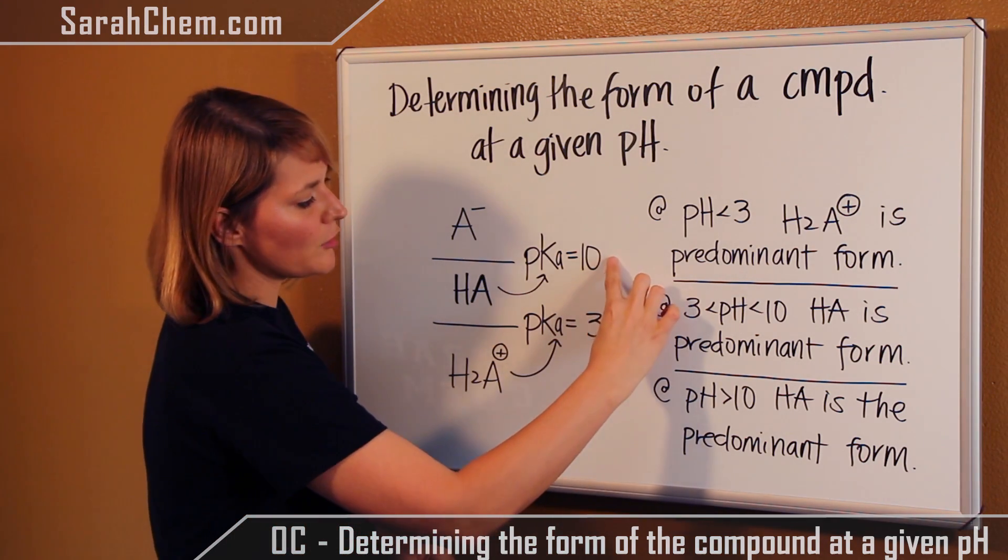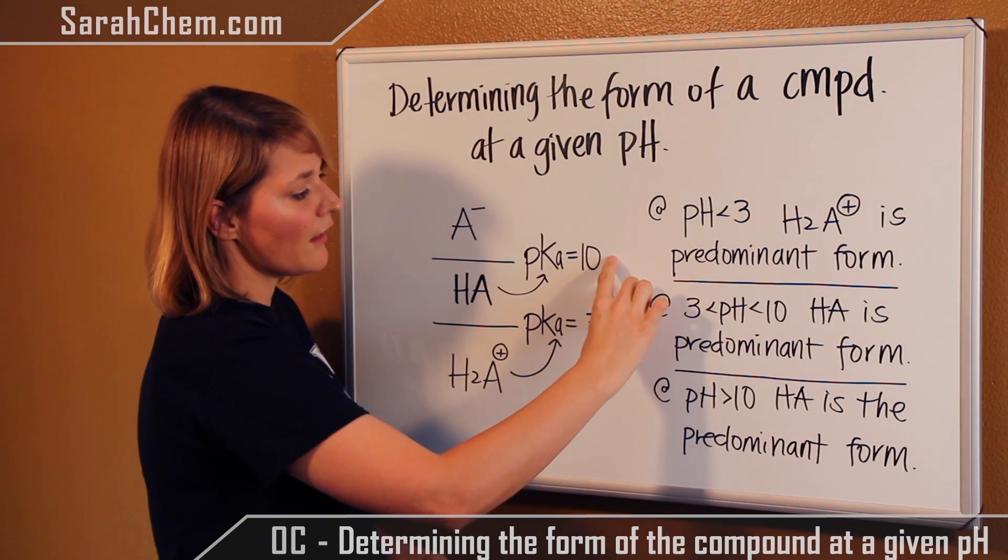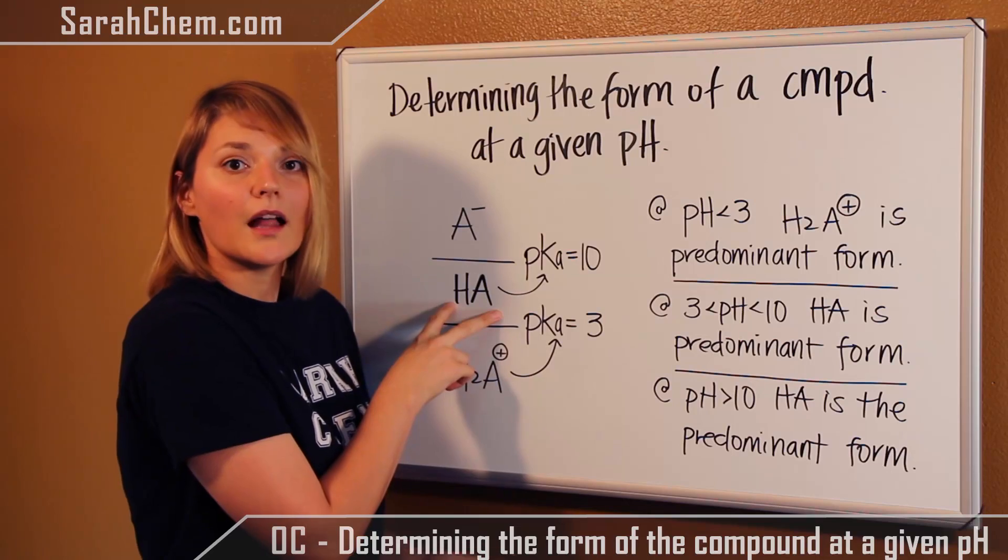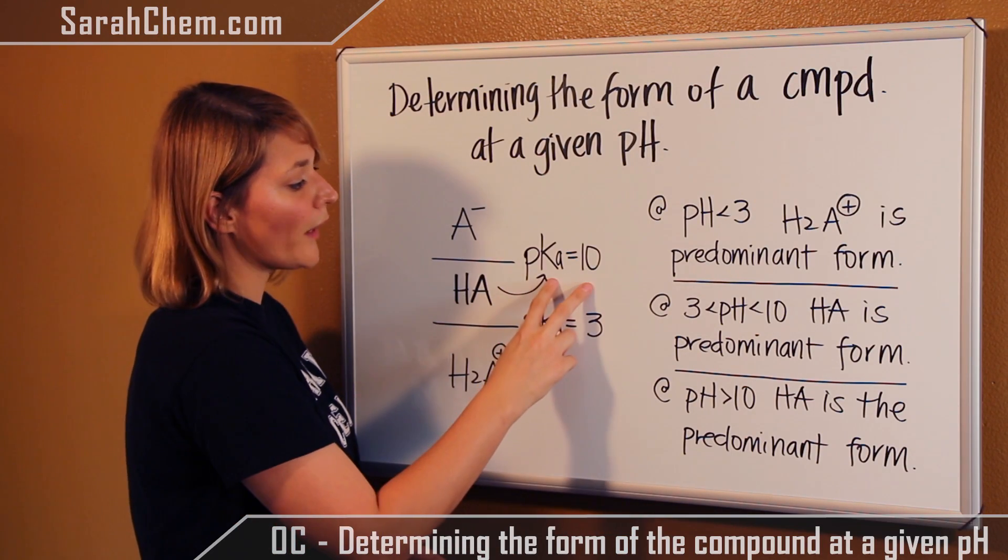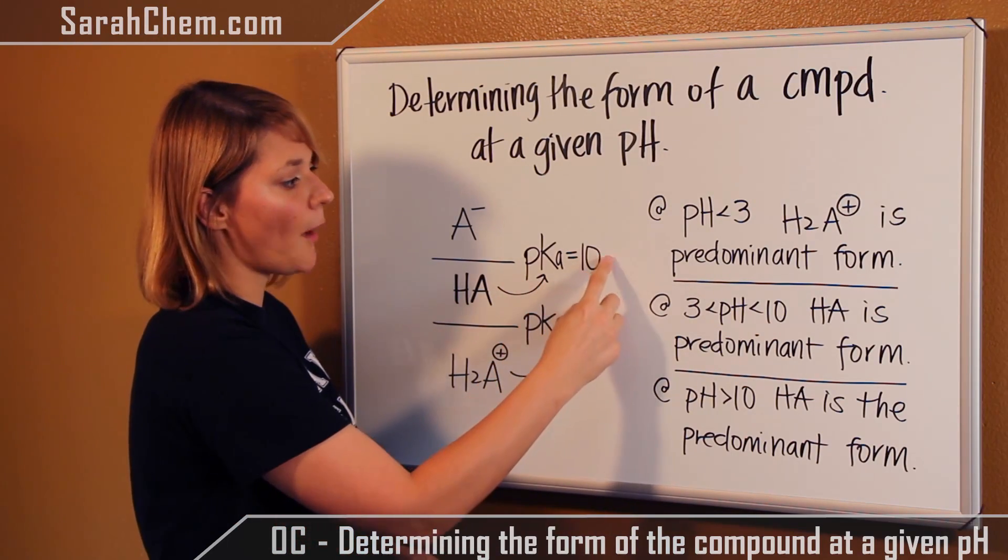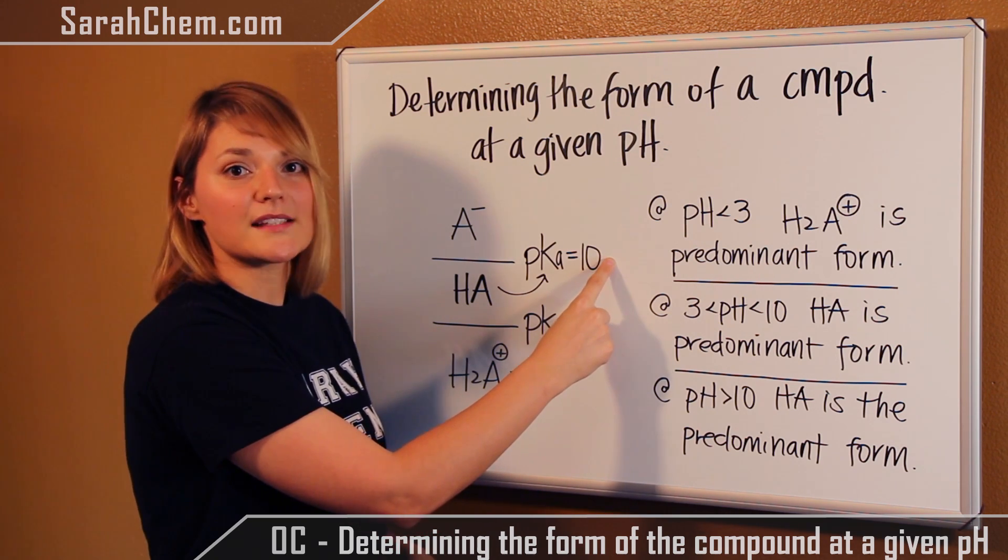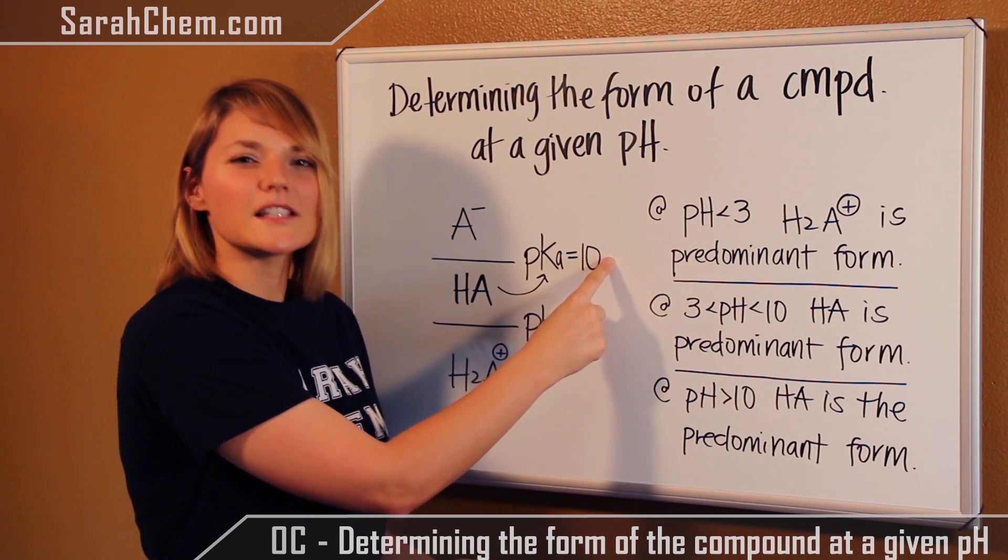If your pH is somewhere between the two pKa values, then you know you're predominantly going to have the neutral species in solution. Lastly, if your pH is greater than the pKa that you have at the topmost portion, then you know you're predominantly going to have the conjugate base in solution. Let's take a look at a specific example.